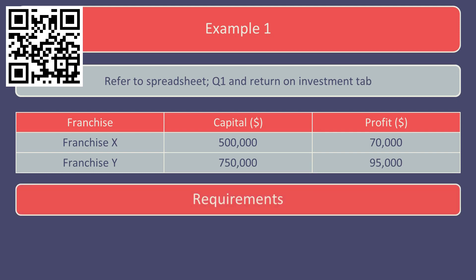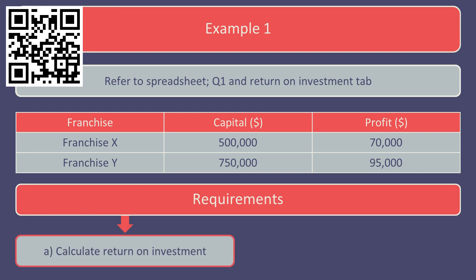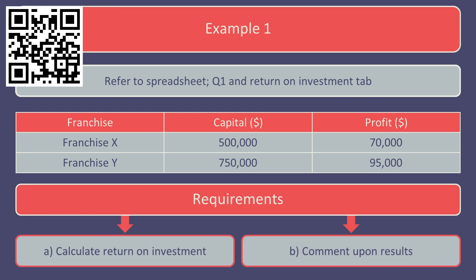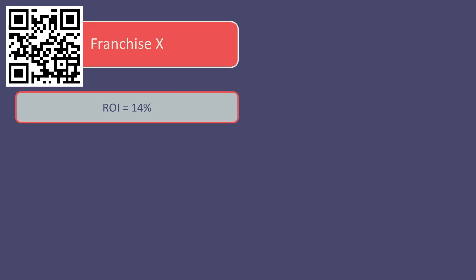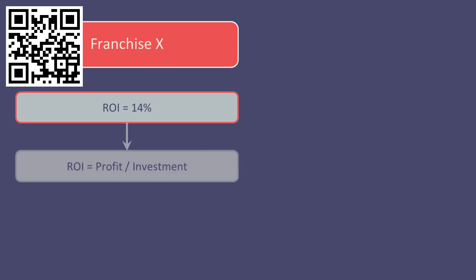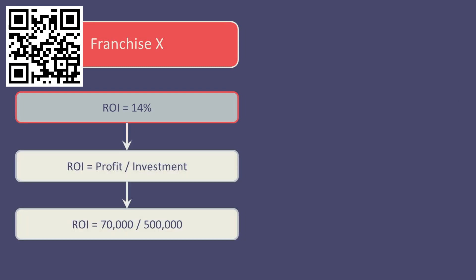The requirement is to calculate the return on investment of each of the proposed franchise investments and to comment upon the results. For franchise X, the return on investment is 14%, being the profit of £70,000 expressed as a percentage of the capital investment of £500,000.